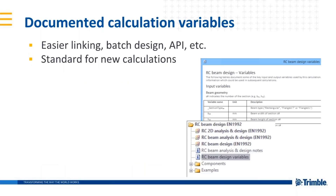In order to help users batch design different calculations, we're also now adding more documentation to each of the calculations in the library, providing information on the key input and output variables that each calculation is using. This will become standard as we develop new calculations, but we're also adding the information to existing calculations based on demand. If you want a specific calculation documented, let us know via the feedback command built into the software, or post your request on the Tekla discussion forums.